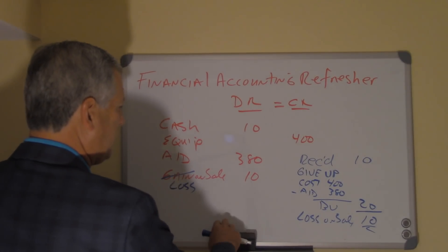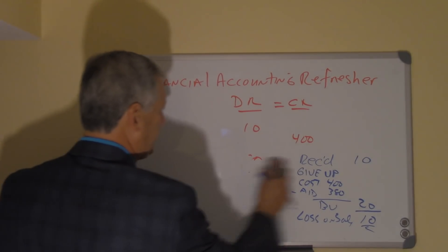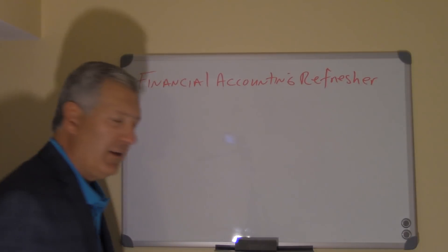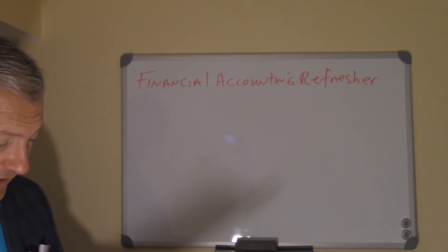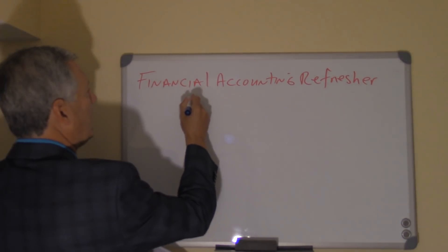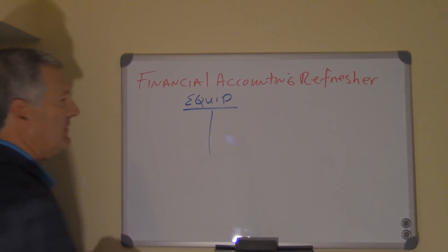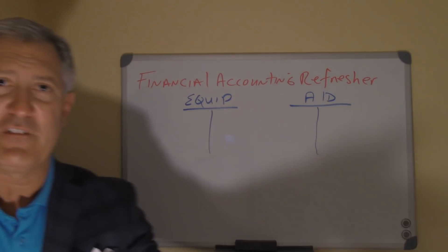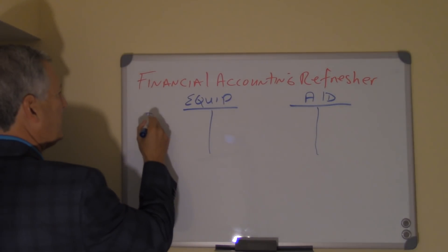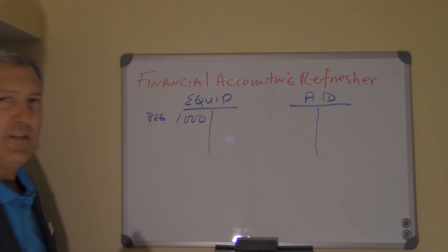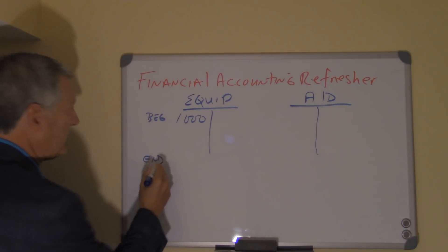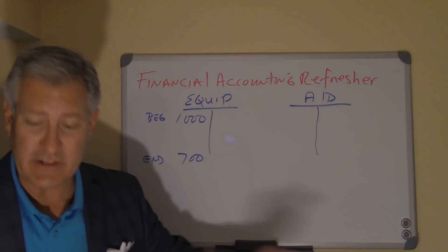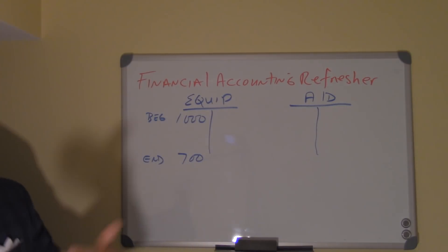Let's remember that journal entry and take it a step further by looking at T-accounts. Let's look at the equipment asset account and the accumulated depreciation T-account. Assume there was a beginning balance in the equipment account of $1,000 and an ending balance of $700. During the year there was a sale of an asset — they received $10 for it, the original cost was $400, accumulated depreciation was $380, and they had a loss on sale of $10. When they recorded that sale, they posted a credit to the equipment account for $400, which brought the balance down to $600.